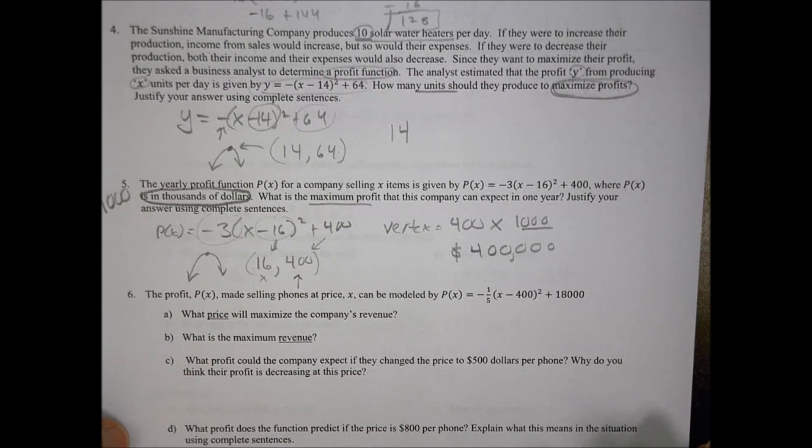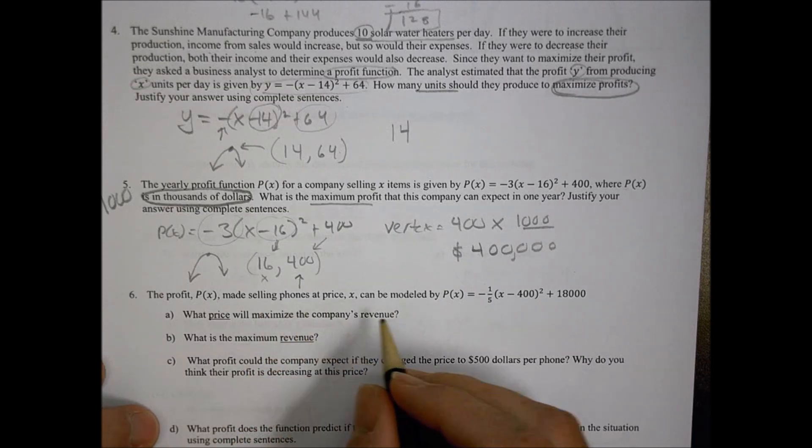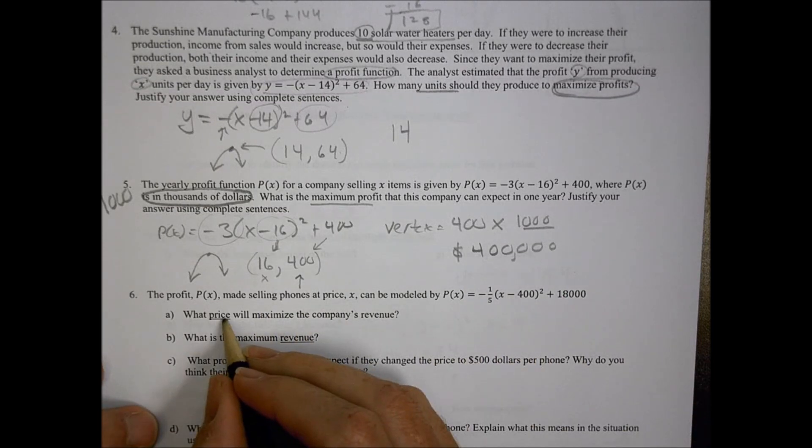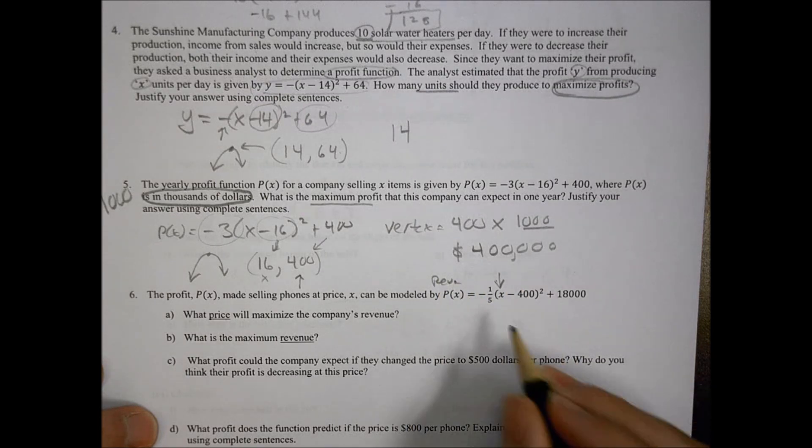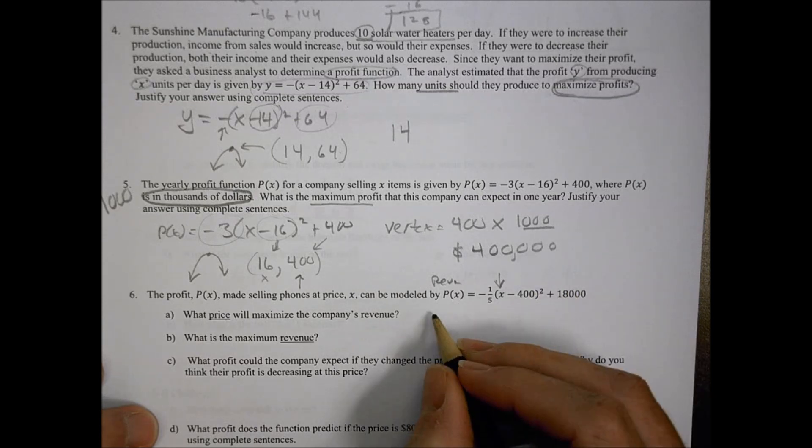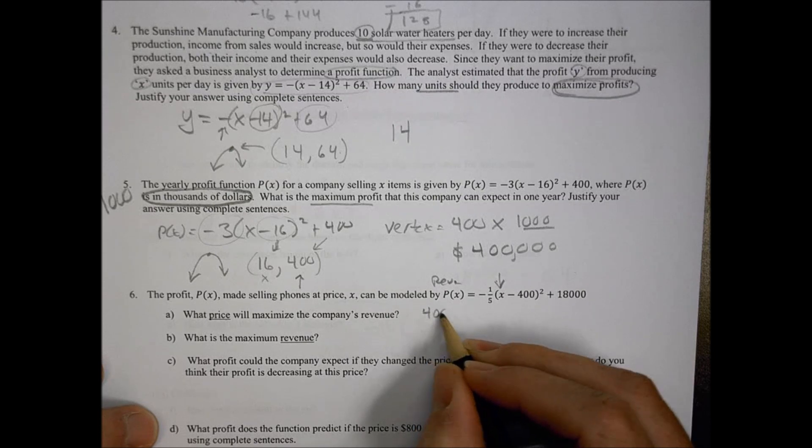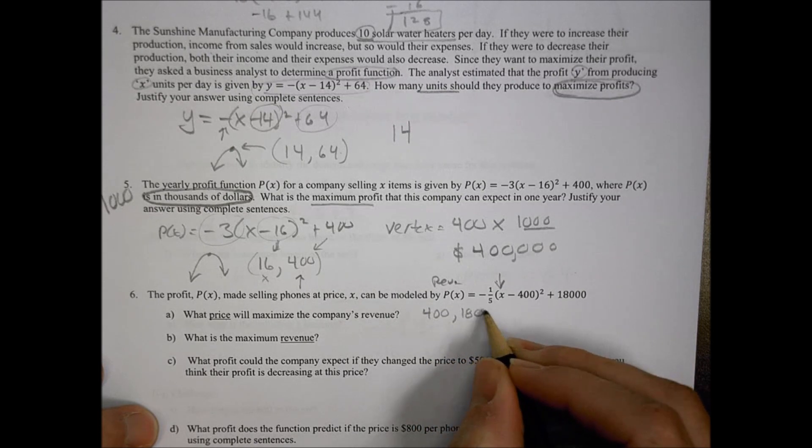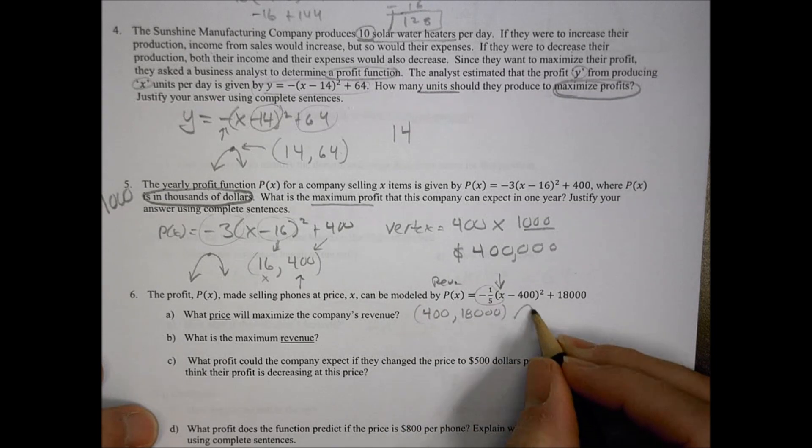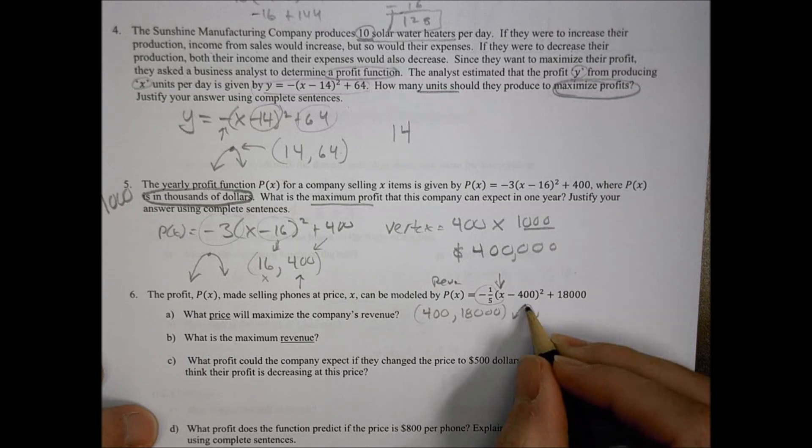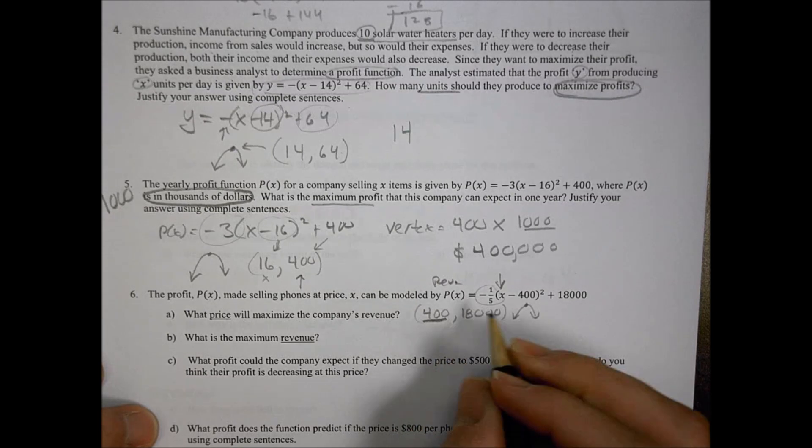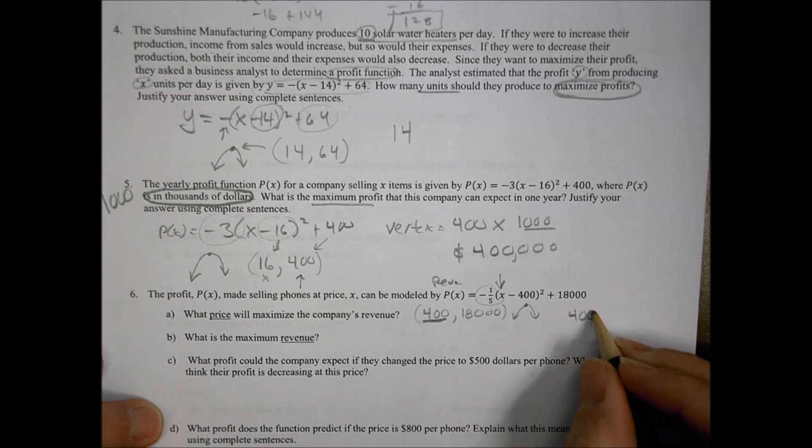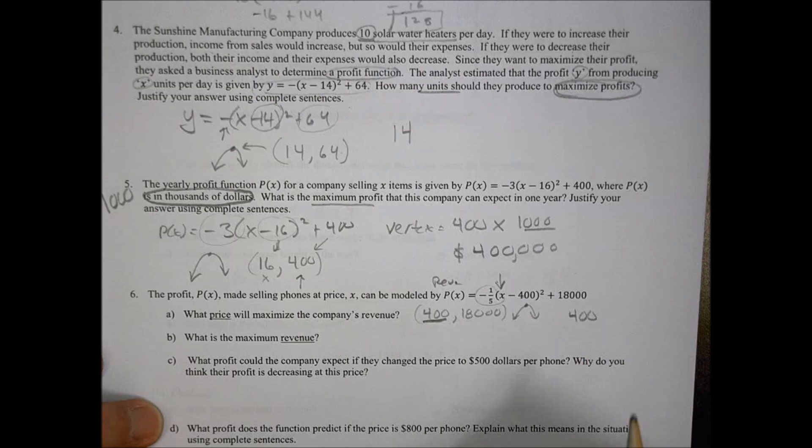Looking at number six, the profit P(x) made selling phones at price x can be modeled by this equation. What price will maximize the company's revenue? Price is going to be this number. This is our revenue at P(x). Our vertex is going to be at 400 comma 18,000. We know it's curving down like this. At what point am I going to get that high point? We would say $400 gets you the maximum profit. That's how you reach the maximum point by putting 400 in the place of x. The maximum revenue that I could generate is going to be the $18,000 there.